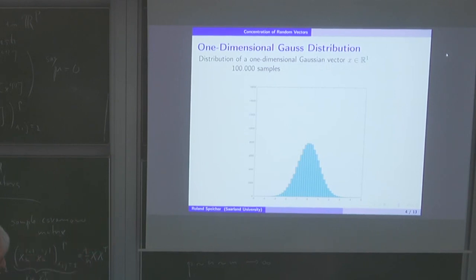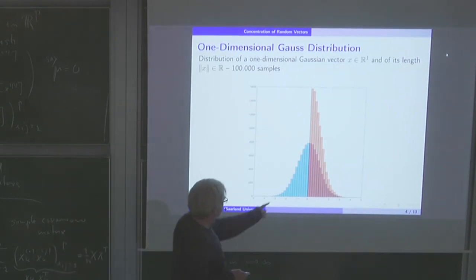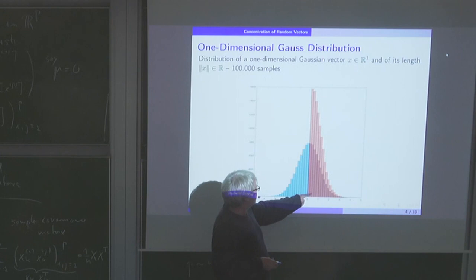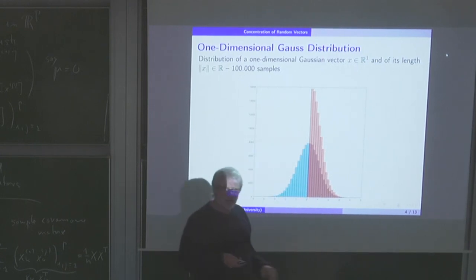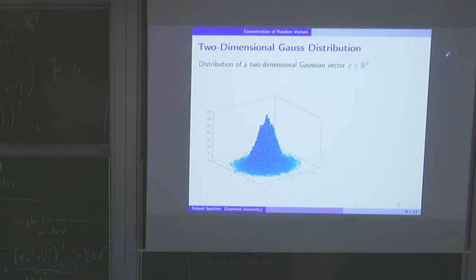What we want to look at is the length of a vector. In one dimension the length is a mapping from R^P to R; in one dimension the length and the vector itself are not very different, because in R a vector is either positive or negative. So the distribution of the length is essentially just twice the distribution of the Gaussian itself — in one dimension nothing very interesting.